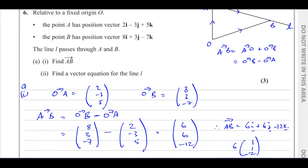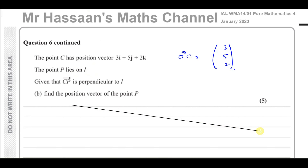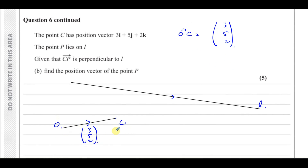Now for part 6B. The point C has position vector 3i plus 5j plus 2k, so OC is (3, 5, 2). The point P lies on line L, and CP is perpendicular to L. So we have our line L, and point C is somewhere off the line. We have to find the position vector of point P — that is, the vector from O to P.